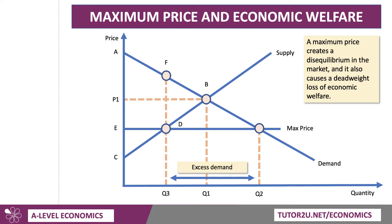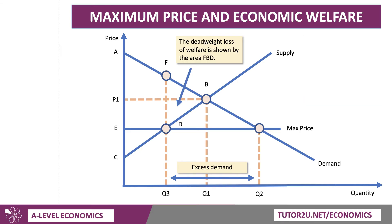So a maximum price creates a disequilibrium in the market, and it also causes a deadweight loss of welfare. The deadweight loss of welfare is the loss of producer and consumer surplus that was there before at price P1, output Q1, but is no longer there because the output has been restricted. The deadweight loss is shown by the area F, B, D — and there is your welfare loss. Essentially, the market is no longer allocatively efficient.